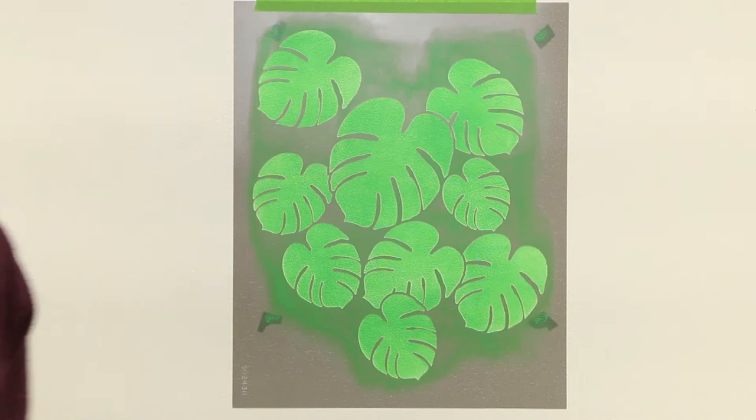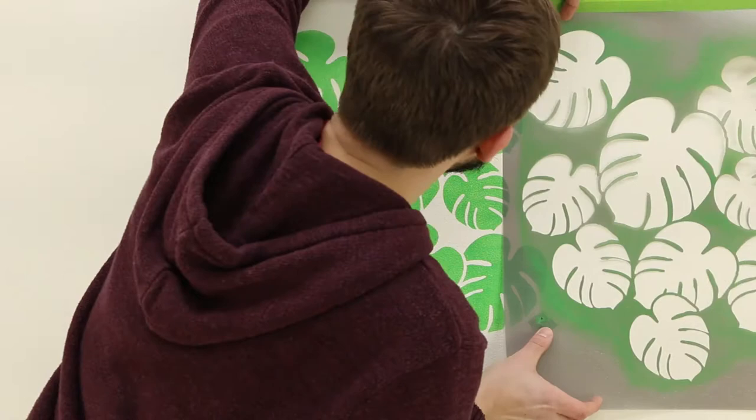Once satisfied, use a stencil brush to swirl paint through each registration mark onto the frog tape below. Gently peel off the stencil, shift the design over, and line the registration marks up for the next repeat.